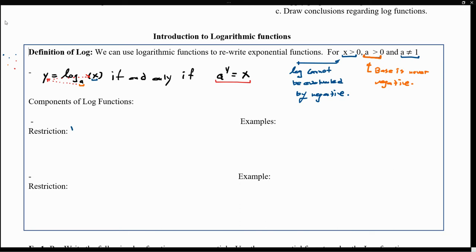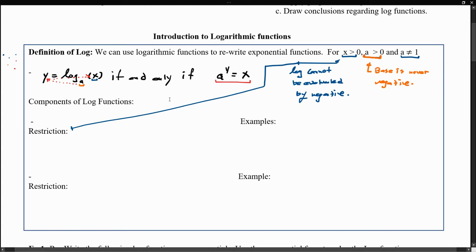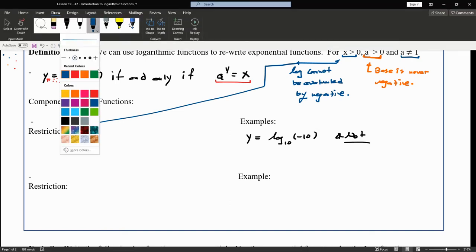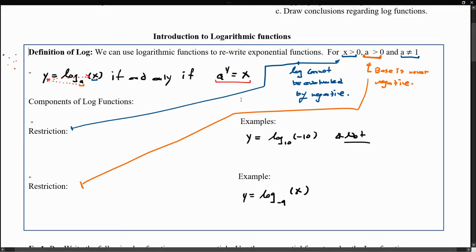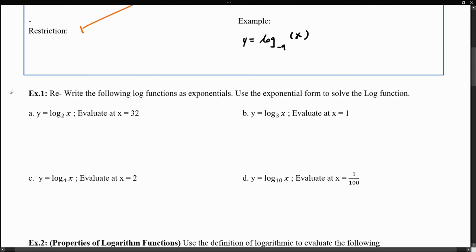We've already discussed the restrictions. The first restriction is that we can never evaluate the log at a negative number — for example, log base 10 of negative 10 is not allowed. The second restriction is that the base cannot be negative, so log of base negative 9 evaluated at x doesn't work. Now that we've introduced the logarithm function and discussed both restrictions, let's see how to evaluate logarithm functions by rewriting them in exponential form.